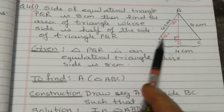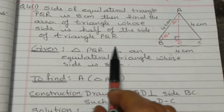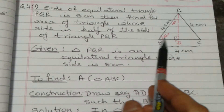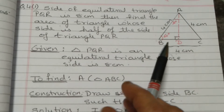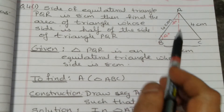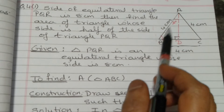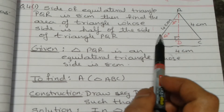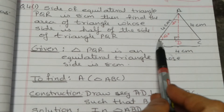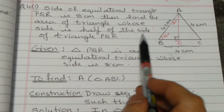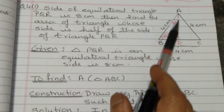Angle B is 60 degrees because all angles of an equilateral triangle are 60 degrees. So in triangle ADB, we have 60 + 90 = 150 degrees, and the remaining angle BAD is 30 degrees. Therefore triangle ADB is a 30-60-90 degree triangle. AD is opposite 60 degrees, so AD = root 3 upon 2 into AB.